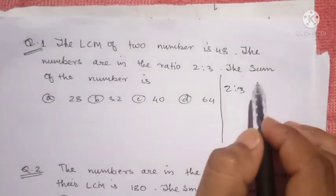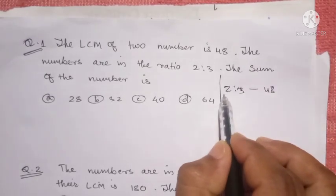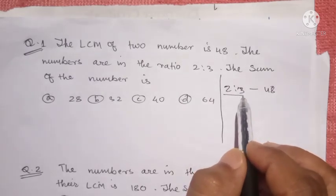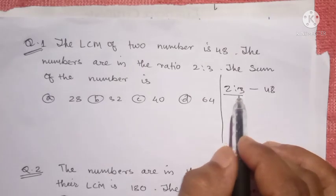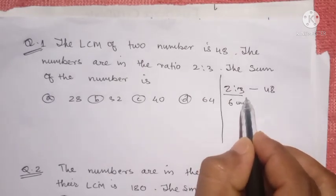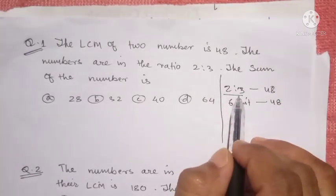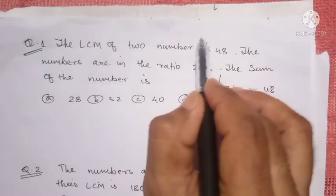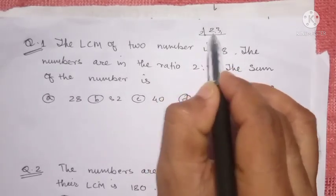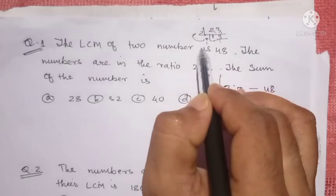This is the LCM of two numbers. 6 units, 48 units and 6 units. So we would need a basic method on 6 units, two units to write, three units. Now this is going to be 100,000, eight of them, and we will get 6 units. So 6.